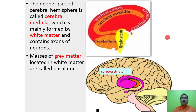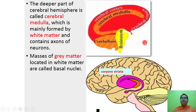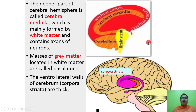The deeper part of the cerebral hemisphere is called the cerebral medulla, formed by white matter and contains axons of neurons. The masses of gray matter located in the white matter are called basal nuclei. The ventrolateral walls of the cerebrum, called corpora striata, are thick.